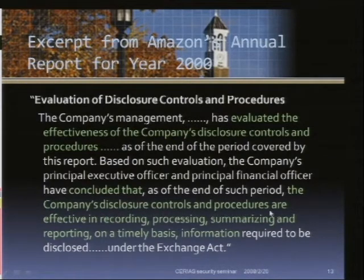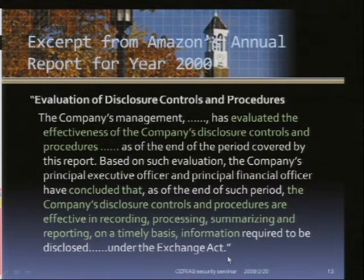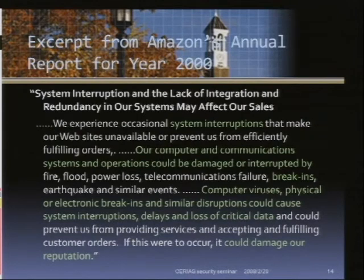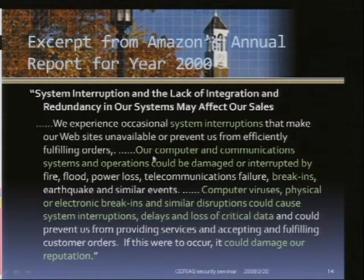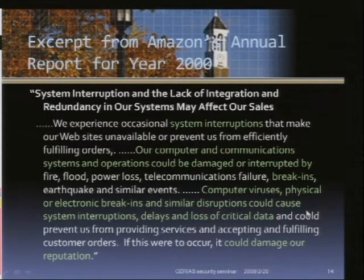They found that the company's disclosure controls and procedures are effective in recording, processing, summarizing, and reporting on a timely basis information required to be disclosed under the Exchange Act. So we see there is no major flaw or weakness in their information infrastructure. Another example is about the risk factors disclosed in their financial reports, also from Amazon's report. It states, for example, that they experienced system interruptions and their computer and communication systems could be damaged or interrupted by computer viruses, physical or electronic break-ins, and similar disruptions — all of which could cause system interruptions, delays, or losses of critical data that could prevent them from providing services or fulfilling orders.